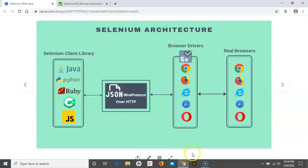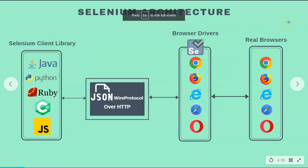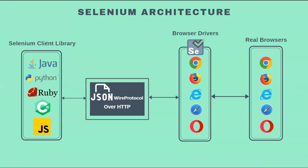Here on my screen, I have prepared a diagram for Selenium architecture. On the left-hand side, we have the Selenium client library section. The Selenium client library is provided because Selenium supports multiple programming languages like Java, Python, Ruby, C#, and JavaScript. This client library helps you to write your code in any of these supported programming languages in the integrated development environment.